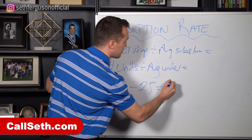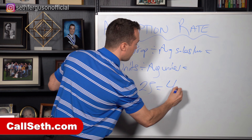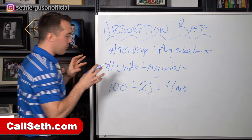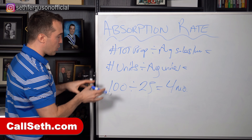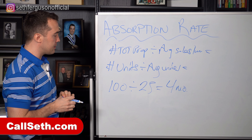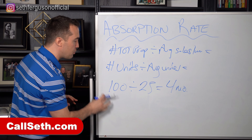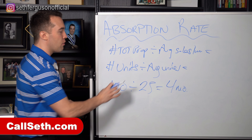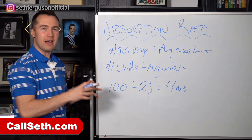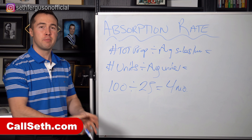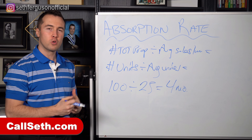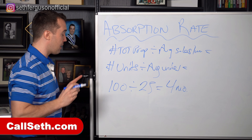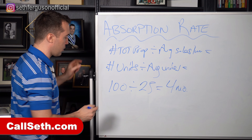If 25 properties on average are sold every month, we have 100 divided by 25, and that gives us four months worth of inventory. What the absorption rate is telling us is: if no new product hit the market, it would take four months for all of that current inventory to be absorbed or sold into the market.